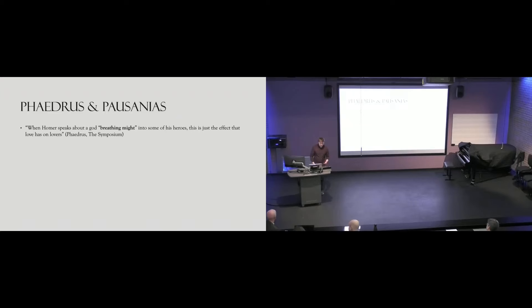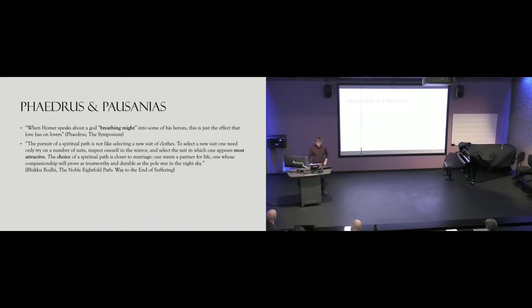Many of the world's religions emphasize this idea of a relationship either with a god or to the teachings of a spiritual path as the beginning of virtue and wisdom. In Buddhism, Bhikkhu Bodhi writes in The Noble Eightfold Path that the pursuit of a spiritual path is not like selecting a new suit of clothes - the choice of a spiritual path is closer to marriage. One wants a partner for life, whose companionship will prove as trustworthy and durable as the pole star in the night sky. Similarly, in Christianity, the book of Proverbs depicts a personification of wisdom calling out to humanity, saying choose my instruction instead of silver, knowledge rather than choice gold, for wisdom is more precious than rubies. Notice the comparison between desire or attraction and the emphasis on the choice to follow wisdom or a spiritual path.